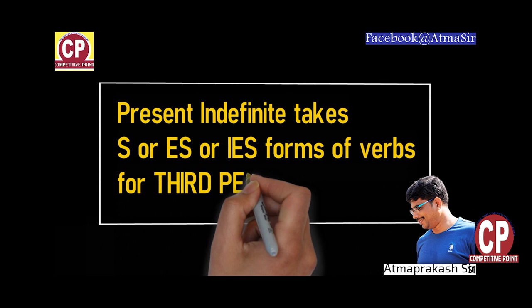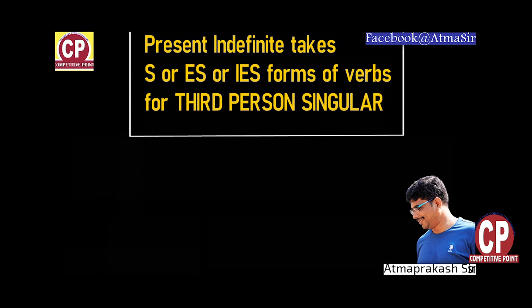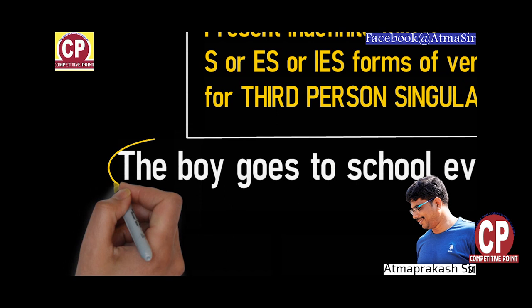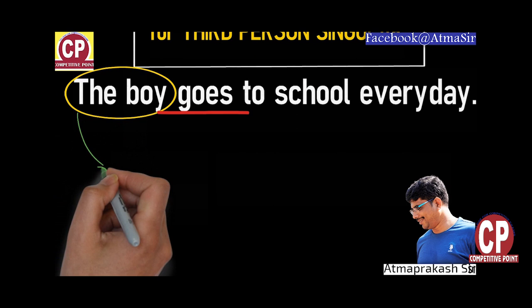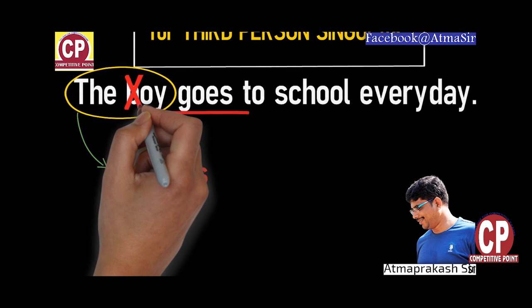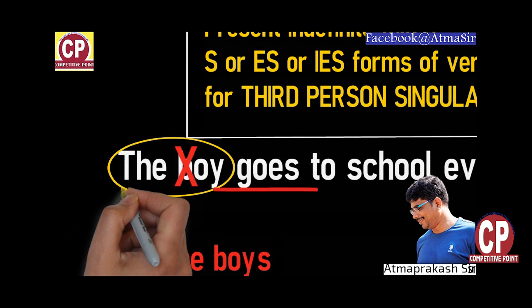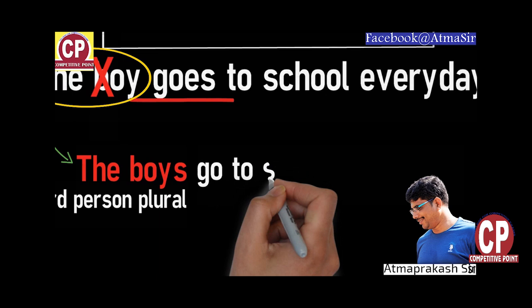It is a well-known rule that the verb in the present indefinite takes the S or ES form if the subject is in the third person singular form. For example, 'The boy goes to school every day.' The subject is the boy — third person and singular number — hence the verb go takes S and becomes goes. If we rewrite the sentence with the subject the boys instead of boy, making it plural, the subject will be third person and plural — no more third person singular. As a result, the sentence will be: the boys go to school every day.